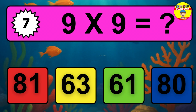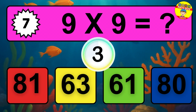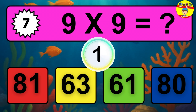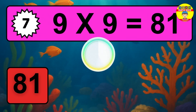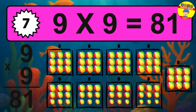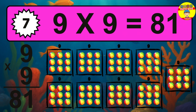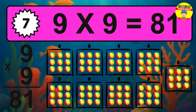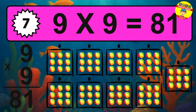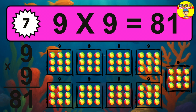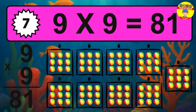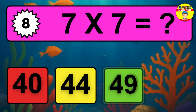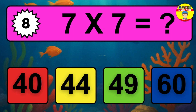Question 7. 9 times 9 equals what? The answer is 9 times 9 is 81. To calculate, we have 9 groups with 9 balls each one. So, how many balls do we have?